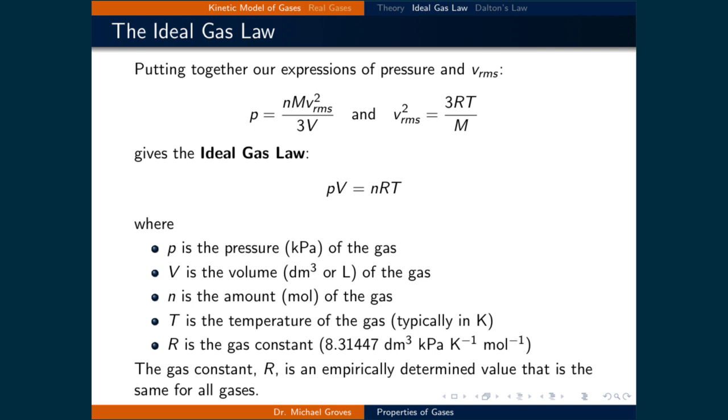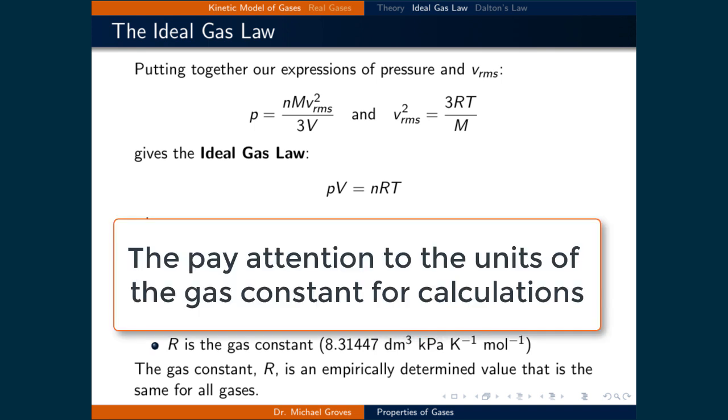Where P is the pressure, V is the volume, N is the number of moles, T is the temperature, and R is the gas constant. The gas constant has many values depending upon the units.